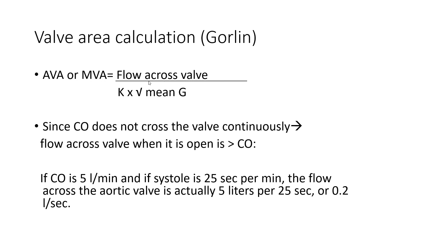Flow divided by square root of gradient — that's the gross idea of the Gorlin equation, developed in the 1950s. The actual equation is flow across the valve divided by a constant times the square root of the mean gradient.